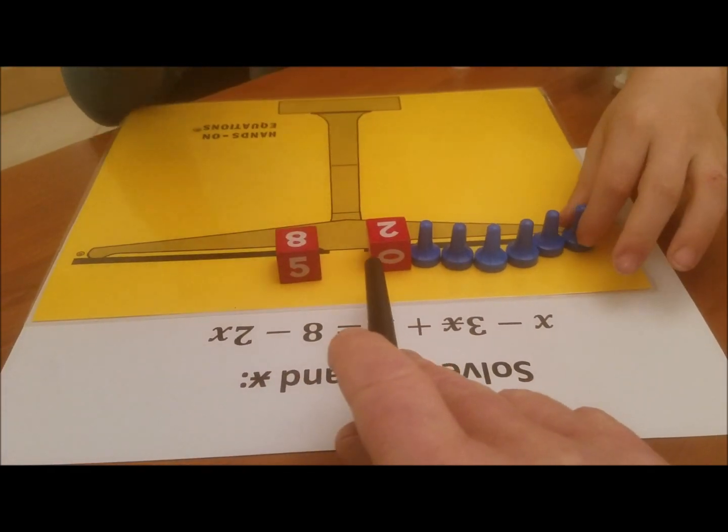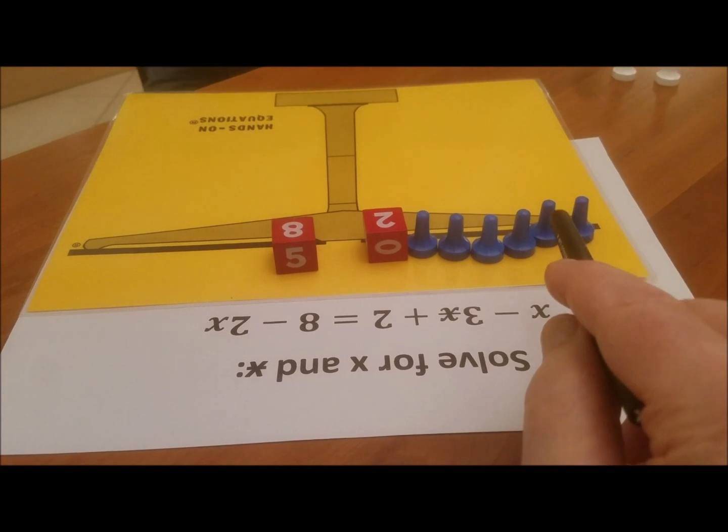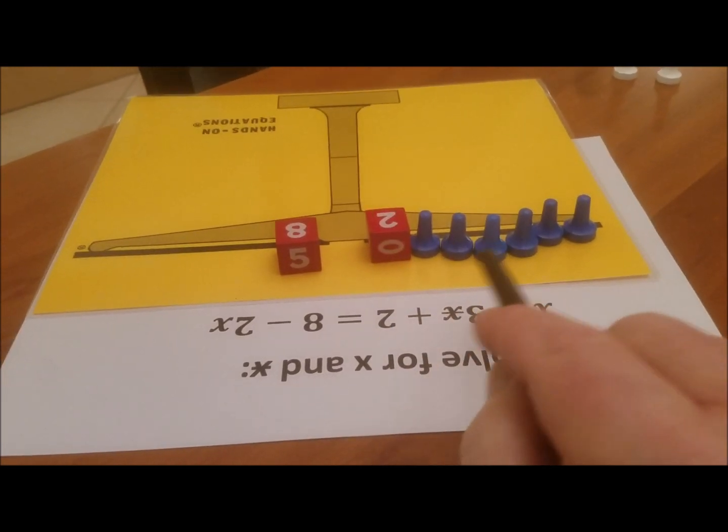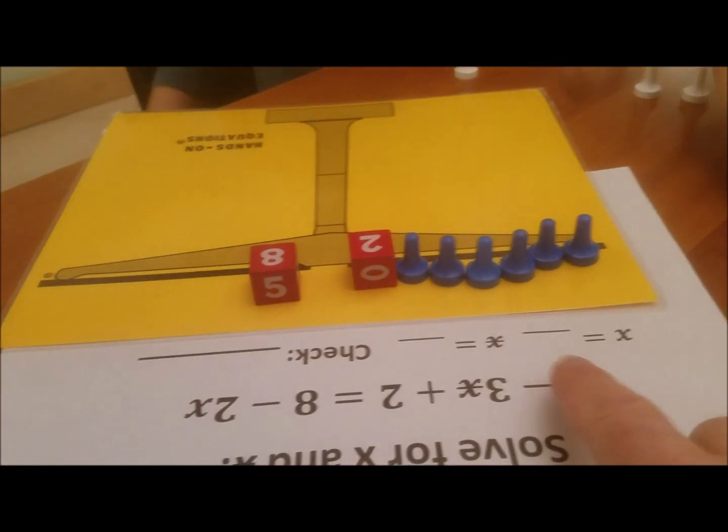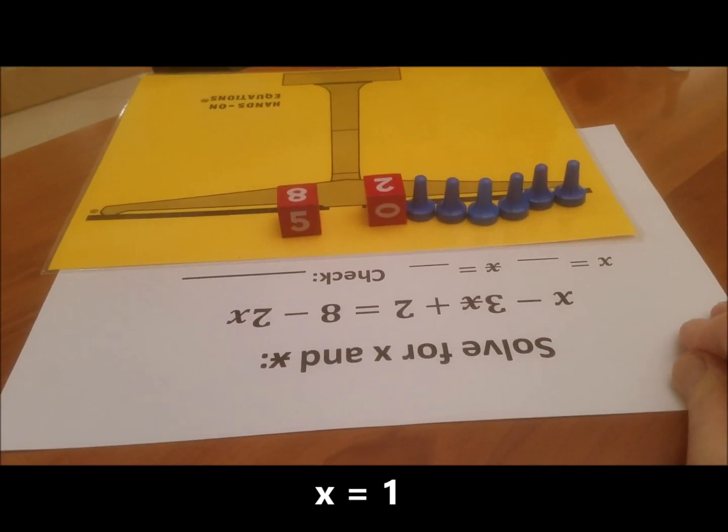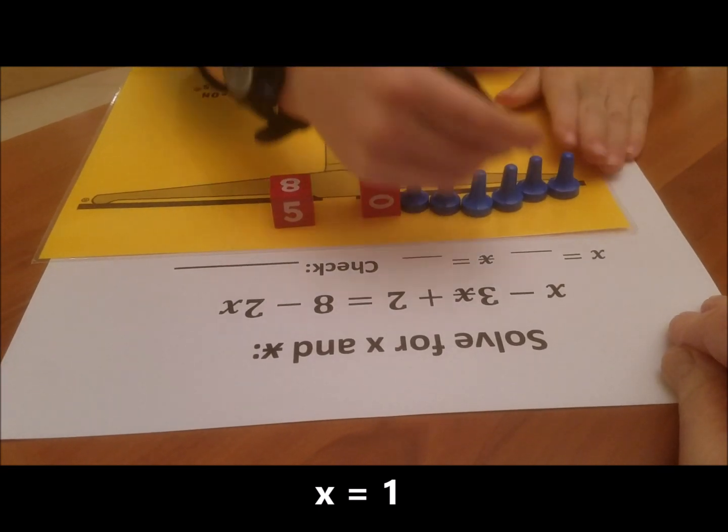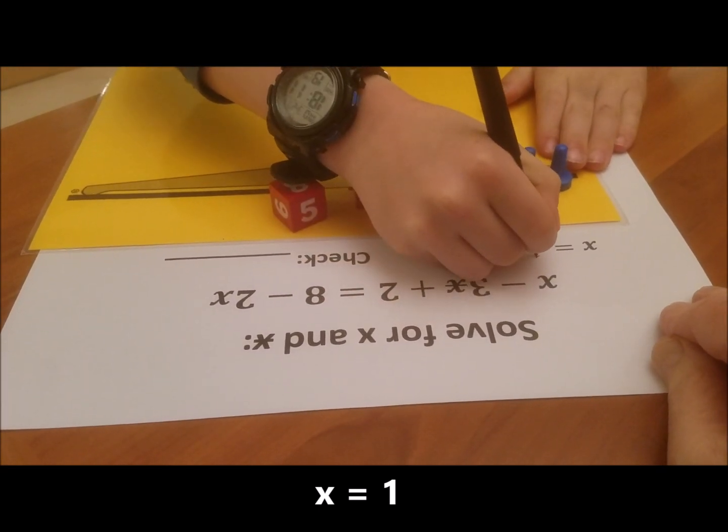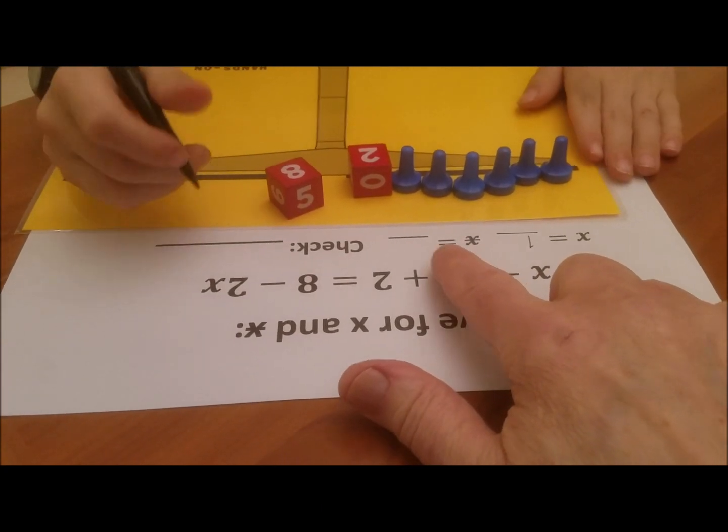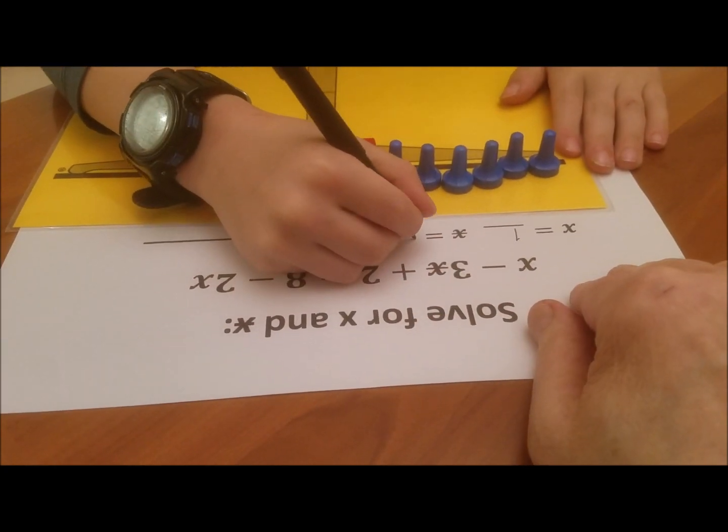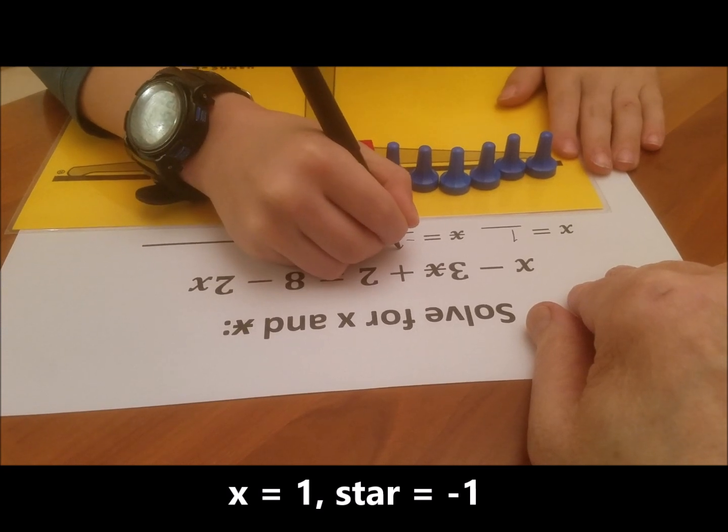So now you have an eight value here, a two value here, and how many blue pawns do you have? So how much is each blue pawn worth? One. Okay. So therefore, over here, would you please write X is equal to one? And if X is one, how much is a star? Negative one. Good.